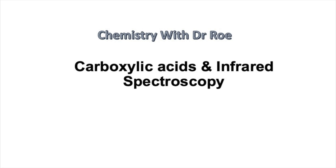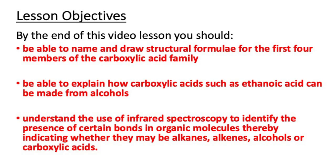Welcome to our latest video on the topic of carboxylic acids and infrared spectroscopy. This video is suitable for GCSE students. By the end of this video lesson, you should be able to name and draw structural formulae for the first four members of the carboxylic acid family, explain how carboxylic acids such as ethanoic acid can be made from alcohols, and understand the use of infrared spectroscopy to identify the presence of certain bonds in organic molecules, thereby indicating whether they may be alkanes, alkenes, alcohols or carboxylic acids.